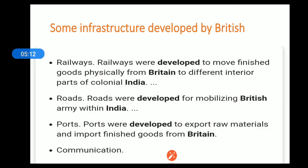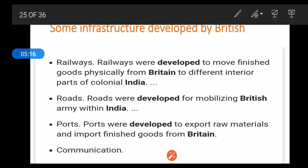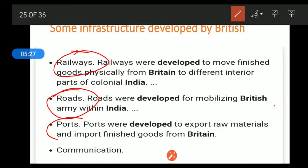Some infrastructure was developed by the British. There are generally four types of infrastructure developed by the British that we are going to see: one is railways, second is roads, third is ports, fourth is communication. And there is one more — electricity. So: railways, roads, ports, communication, and electricity — this is all the infrastructure developed by the British.